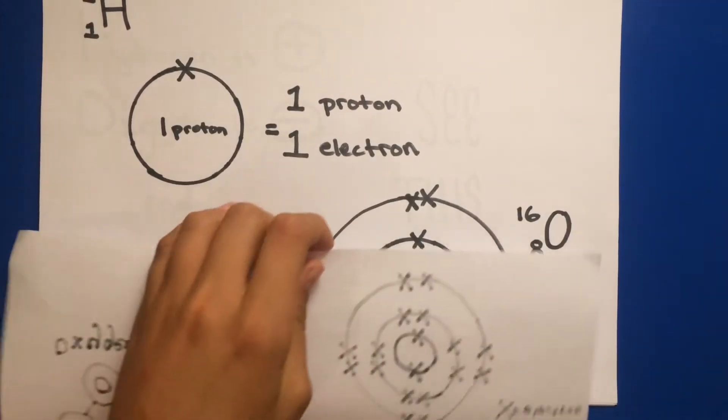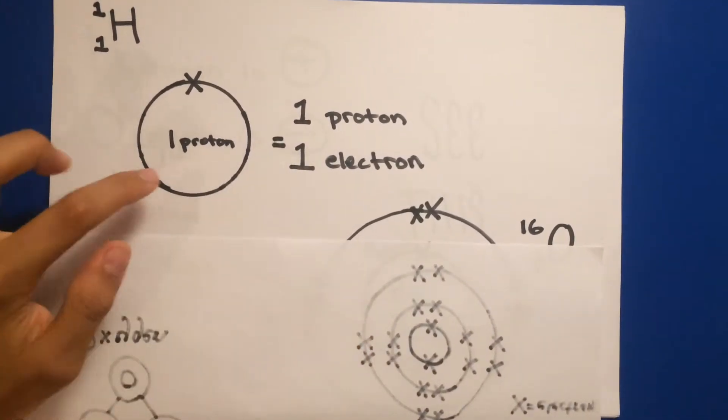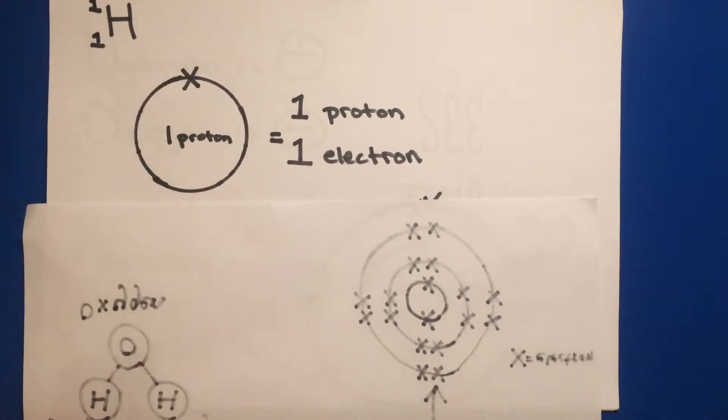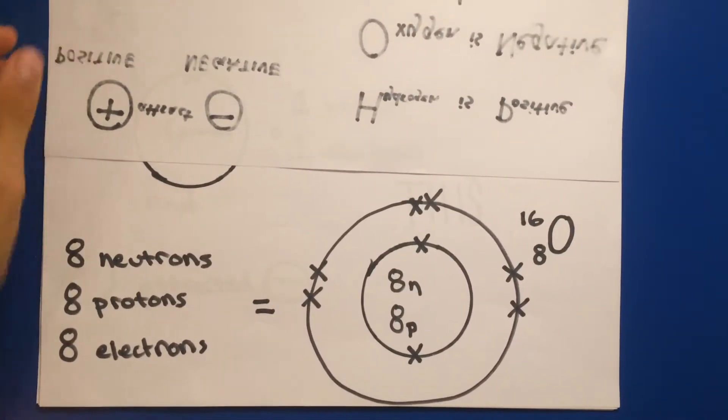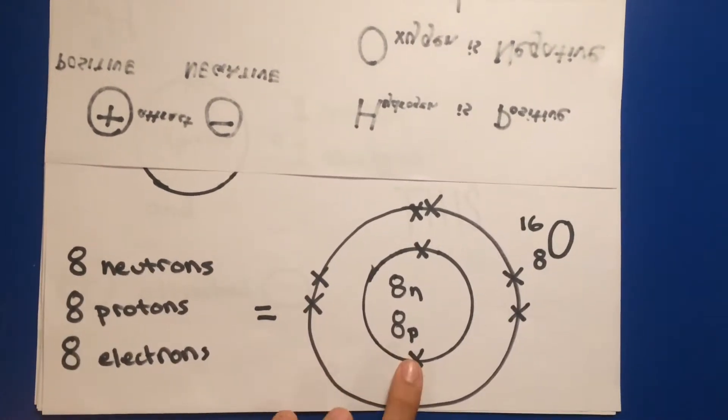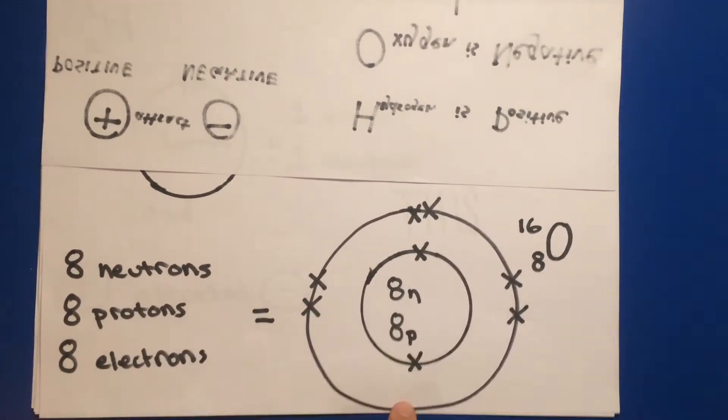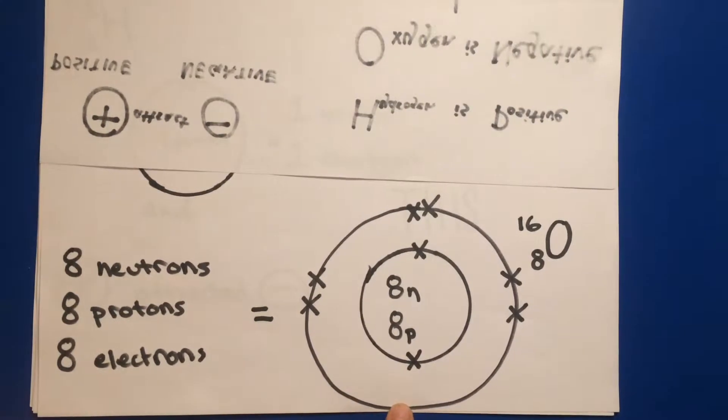In a hydrogen atom, there is only one ring with one electron on it. But in an oxygen atom, there are two rings, the first one fully contained by two and the second one with only six.